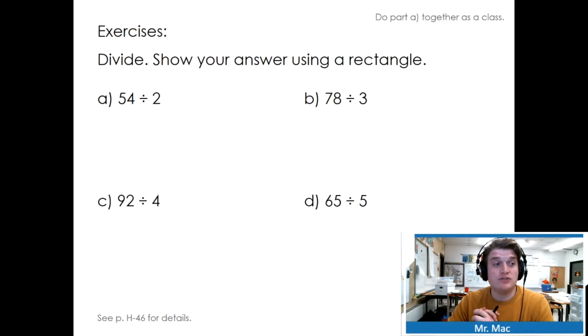Divide and show your answer using a rectangle. So with our rectangle, it gives us the total, which is 54, and it gives us the length along the side, which is 2. So how can we split this up into easy numbers? 50 is kind of an easy number to work with. So instead of 54, we can do 50 and 4. Half of 50, well that's easy, it's a quarter: 25 cents. Half of 4 is 2. 25 plus 2 is 27. Try the next three.